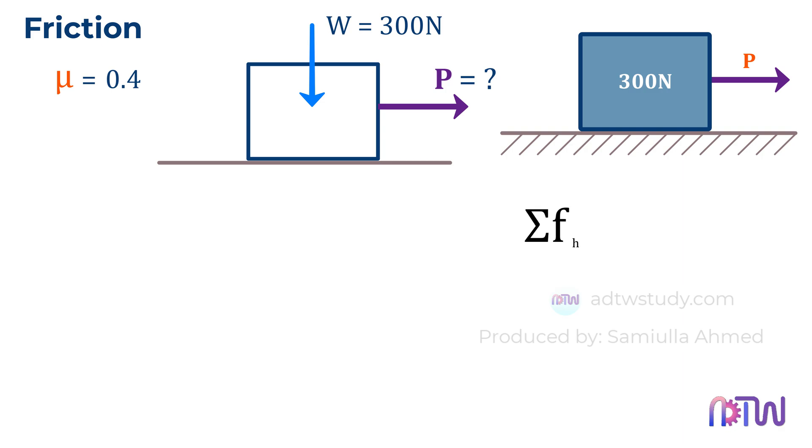This means the sum of all the horizontal forces should be equal to zero, and the sum of all the vertical forces acting on the body should also be equal to zero. First, we will apply equilibrium conditions on the forces acting in the vertical direction. The sum of vertical forces should be equal to zero.